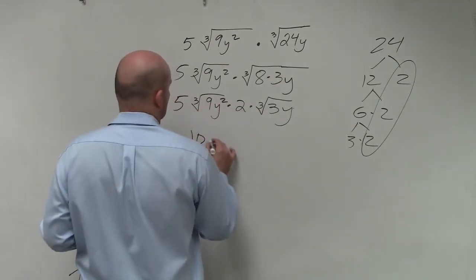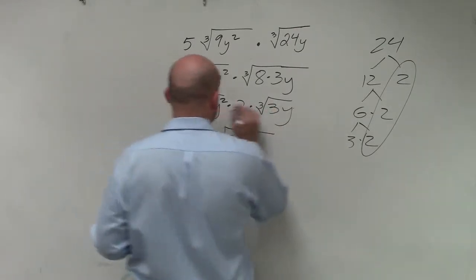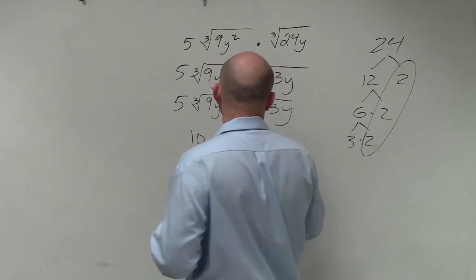So 5 times 2 becomes 10. And that's times the cube root of 9 times 3, which is 27. And y² times y is y³.